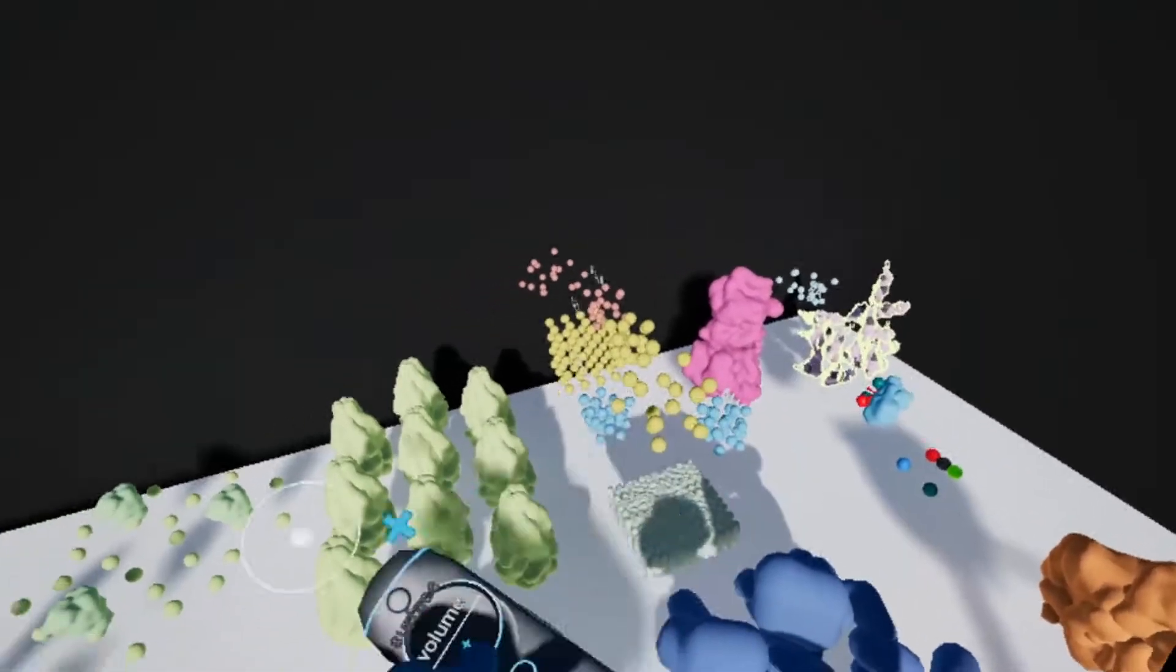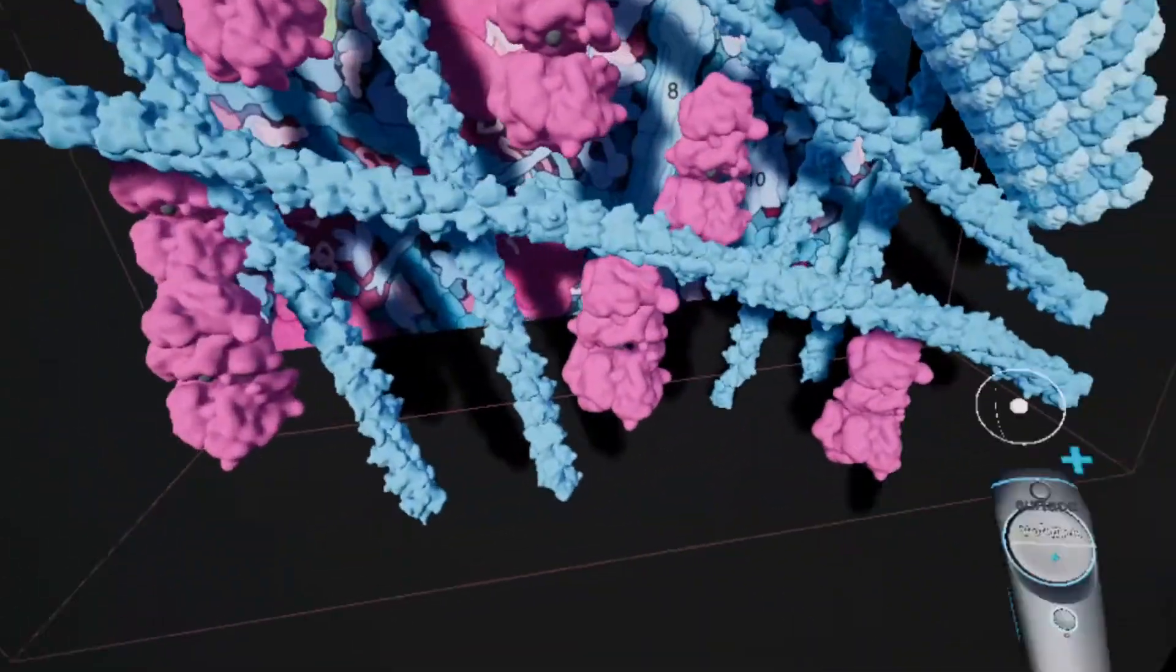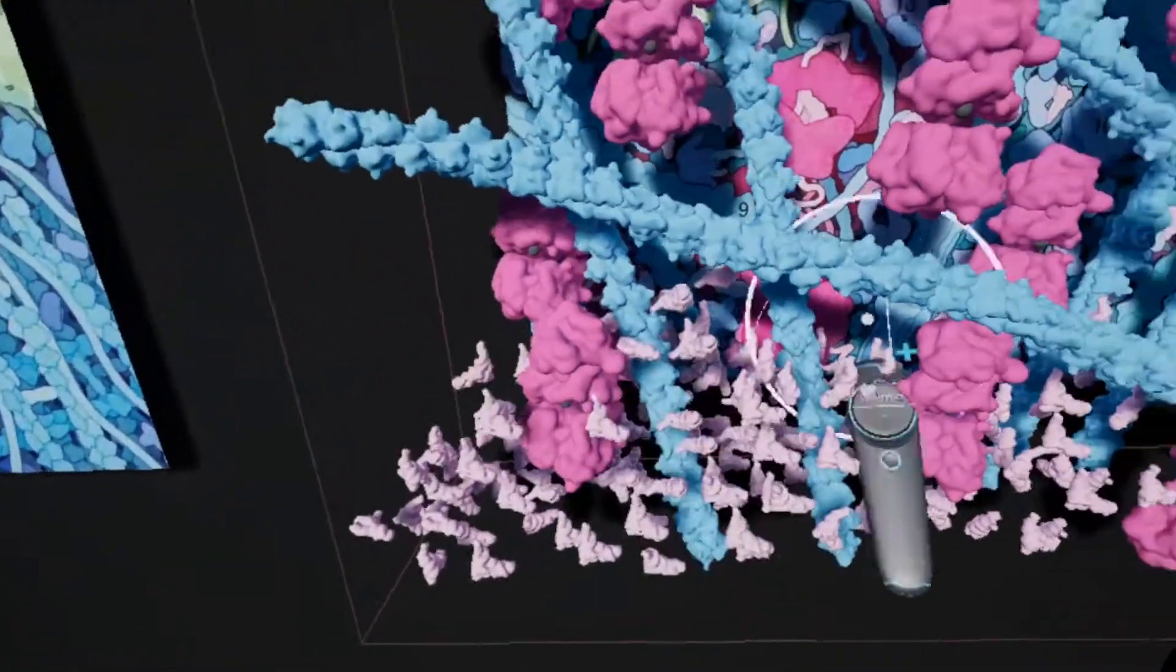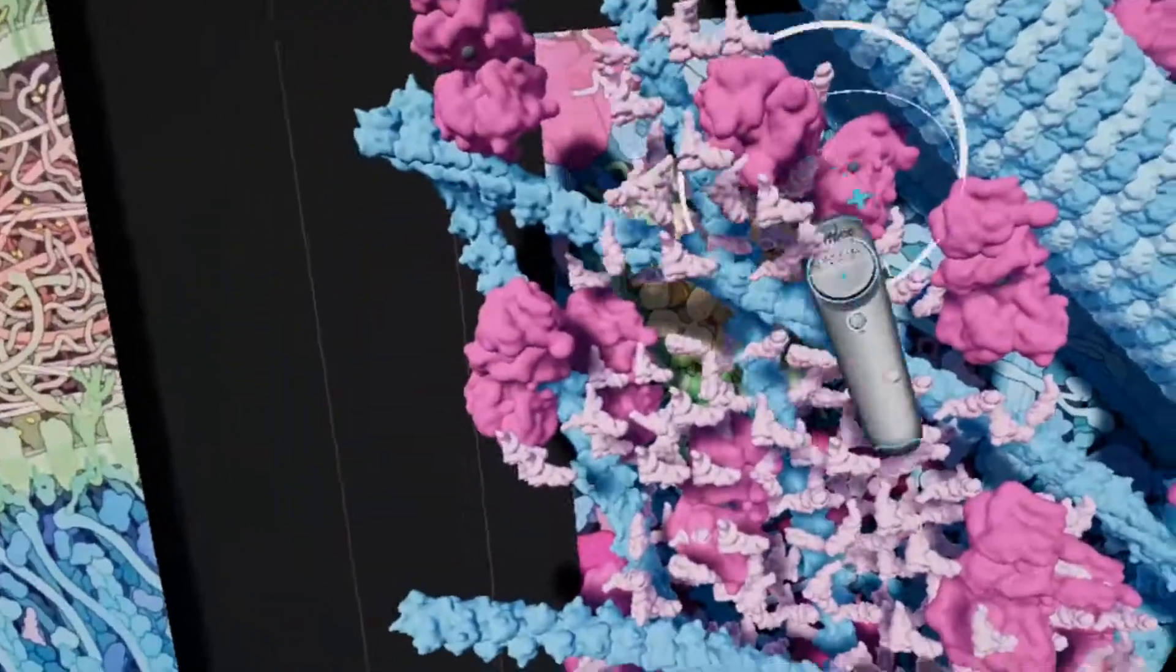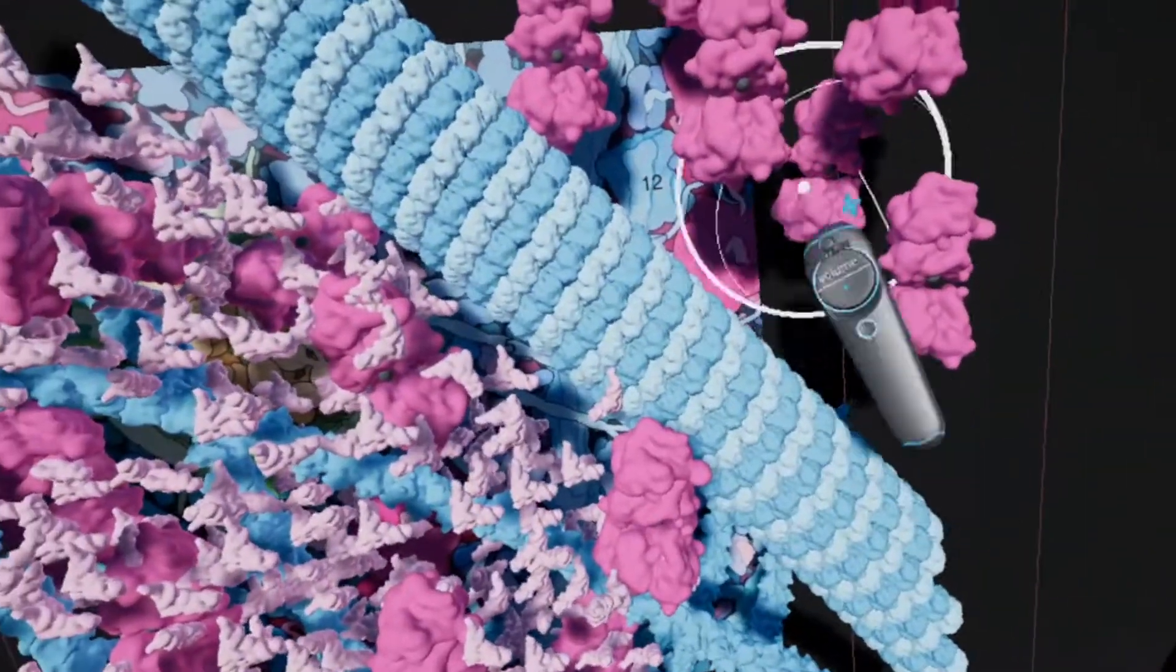Ribosomes interact with tRNA. tRNA carry amino acids, but ours don't have any yet. Let's add some.